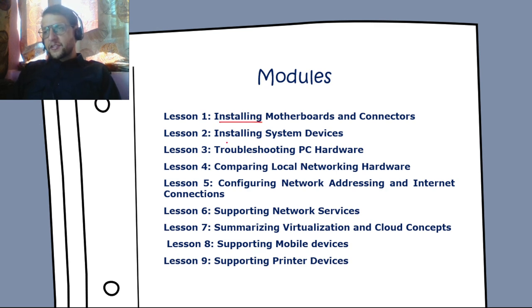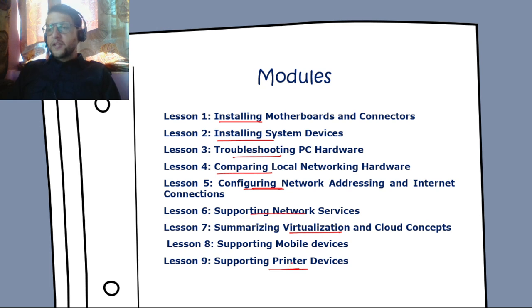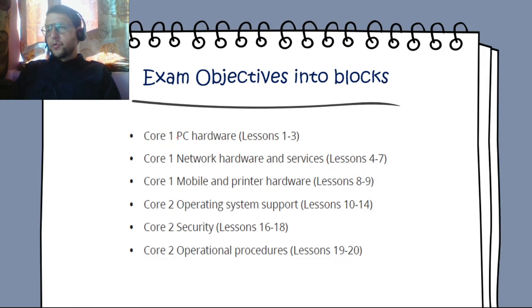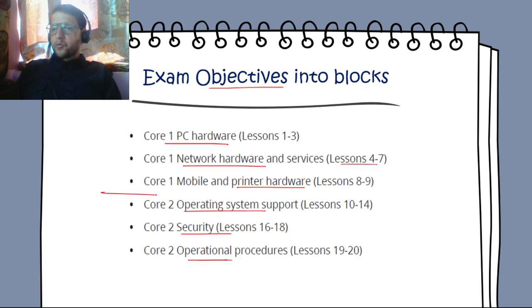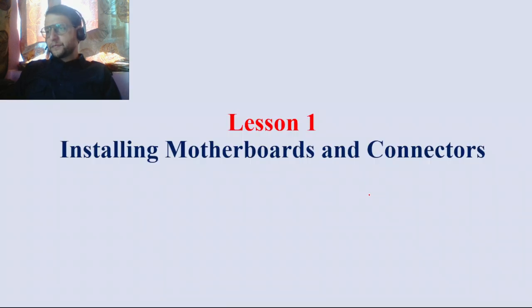The nine modules are: installing motherboards and connectors, installing system devices, troubleshooting PC hardware, comparing local networking hardware, configuring network addressing and internet connections, supporting network services, summarizing virtualization and cloud concepts, supporting mobile devices, and supporting printer devices. Go through all modules via the official book, do the labs, do the practice questions, and review these important points.